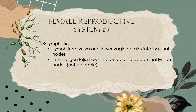Regarding the lymphatics, lymph from the vulva and lower vagina drains into the inguinal nodes. Lymph from the internal genitalia, including the upper vagina, flows into the pelvic and abdominal lymph nodes, which are not palpable.